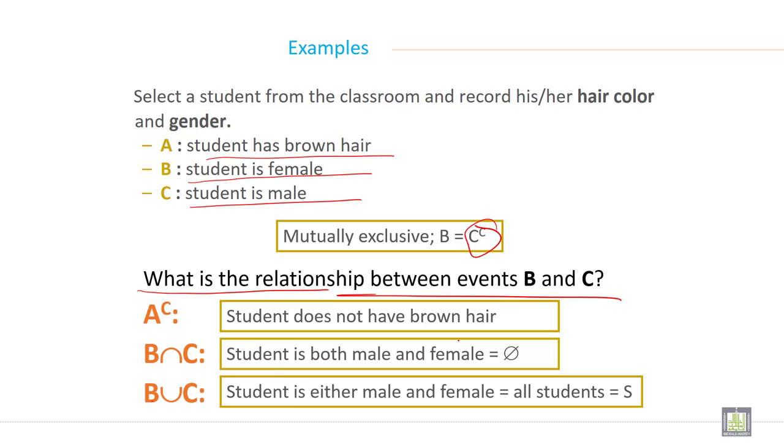And B union C means a student is either male or female, equal to all students. That is the sample space.